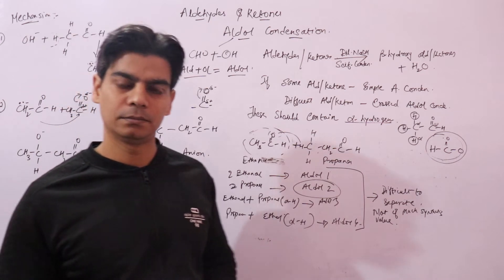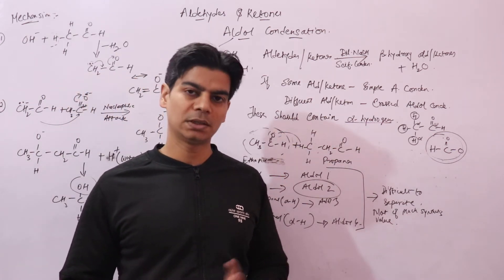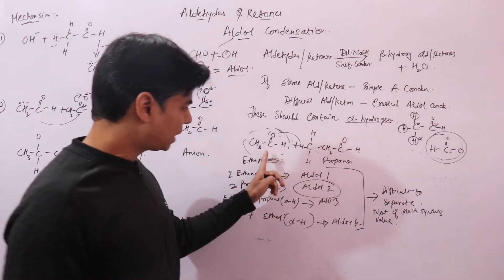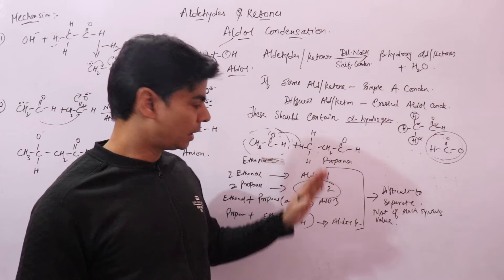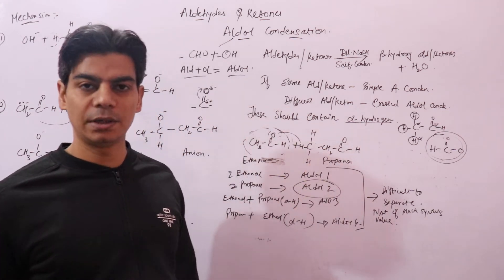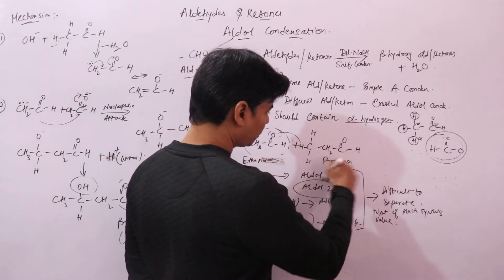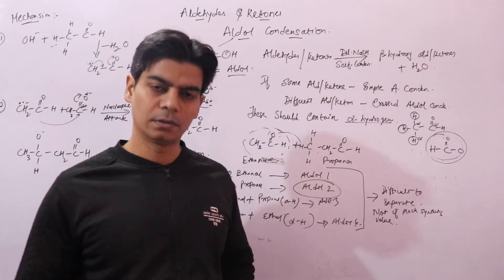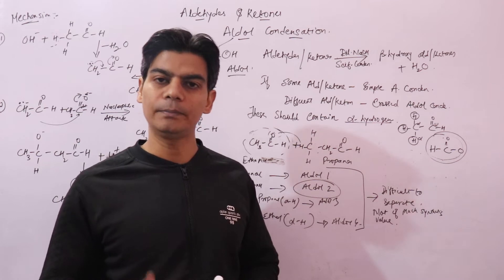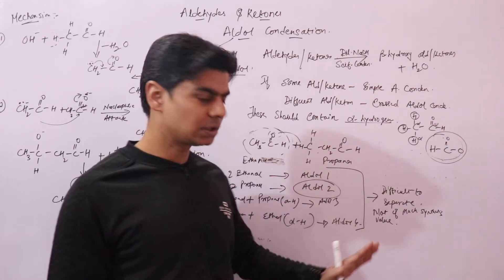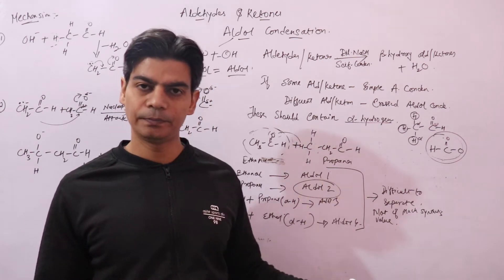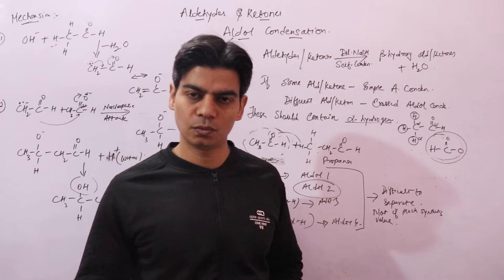To make this a better reaction from a synthetic point of view — that is, from the point of view of making products — since in this reaction both aldehydes have alpha hydrogens, what you do instead is take one aldehyde that does not contain an alpha hydrogen. For example, in place of propanol, you could take formaldehyde, benzophenone, or benzaldehyde, which do not contain alpha hydrogens. In that case you won't get a mixture of products but a single product, so no separation is needed.